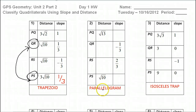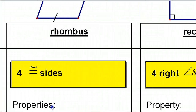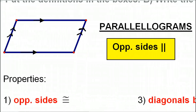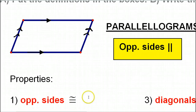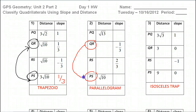Number two is a parallelogram. In a parallelogram, both pairs of opposite sides are parallel. So the slope should be the same for all opposite sides. QR and PS are opposite sides, and in a parallelogram opposite sides are parallel. So if QR has a slope of negative 1/3, then PS has a slope of negative 1/3.